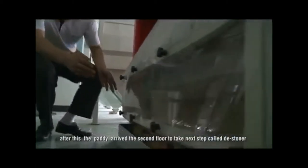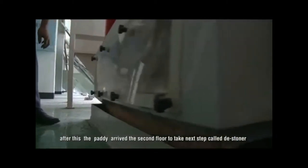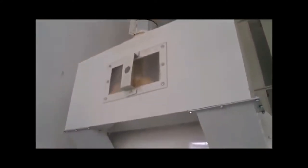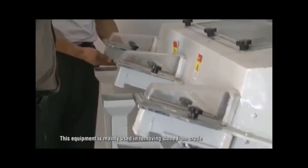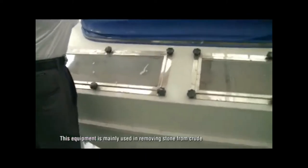After this, the paddy arrives the second floor to take next step, called destoner. The machine is called suction type destoner. This equipment is mainly used to remove the stone from crude.